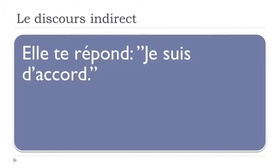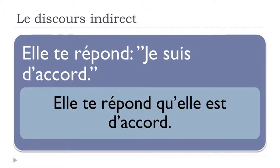I wanted to first show you this simple example. If we've got the sentence 'Elle te répond, je suis d'accord,' répondre means to answer, and te is for you, so she answers to you — 'je suis d'accord' means I do agree. If we want to transpose this structure into discours indirect, it's quite simple.